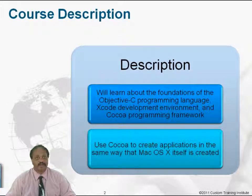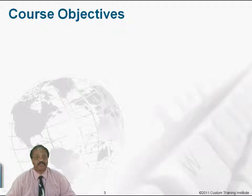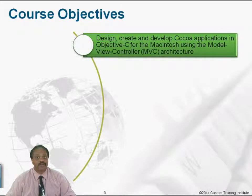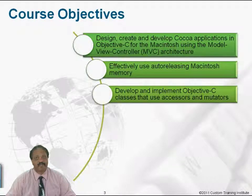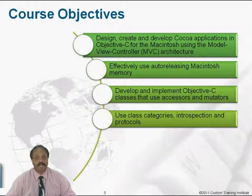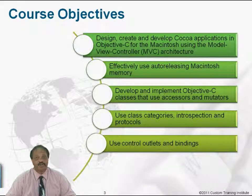What kinds of things are you going to learn about in this course? By the time you finish, you're going to know how to design, create, and develop Cocoa applications in Objective-C for the Macintosh using the Model View Controller or MVC architecture. You'll know how to effectively use auto-releasing Macintosh memory, how to implement Objective-C classes using both accessors and mutators, how to use class categories, class introspection, and protocols. You'll also know how to use control outlets and bindings to reduce the amount of code you write and make your code faster.